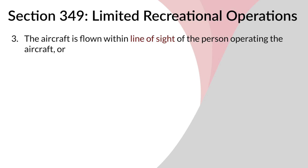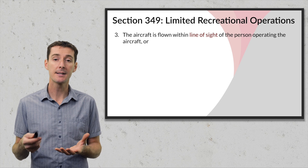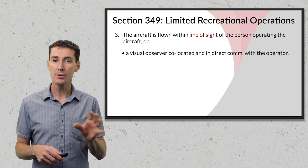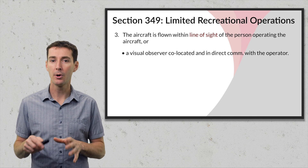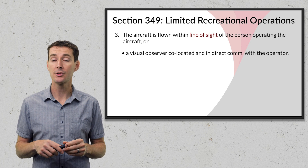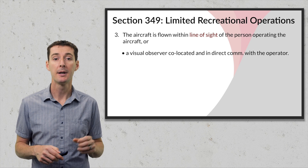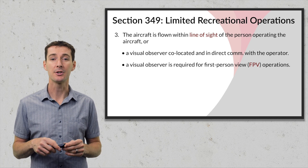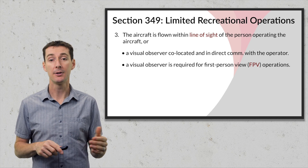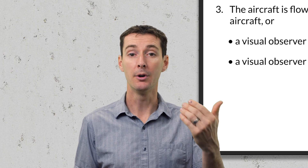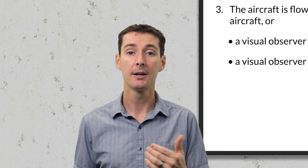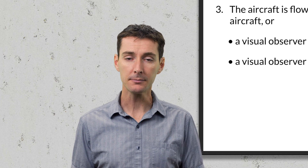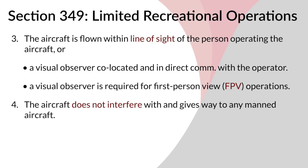Limitation number three: the aircraft must be flown within line of sight of the operator. A visual observer must be co-located or in direct communication with the operator if one is used. A new addition is that if you're doing FPV (first person view) flying with goggles, you need a visual observer with you to help identify other traffic or obstacles.